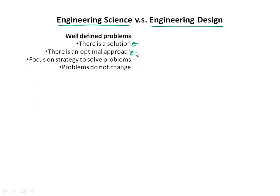Generally this is the answer or the approach that your instructor wants you to write down on a homework problem. In order to solve problems in engineering science, you basically focus on a strategy — how do I solve this type of problem? This is a block on a plane problem, a flow problem, a Thevenin and Norton equivalent problem. You focus on strategies. And of course problems don't change when you're solving them: if you're asked to calculate the current in some circuit, that is a fixed problem.